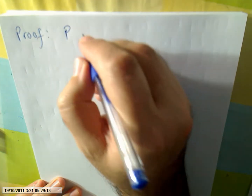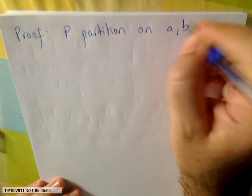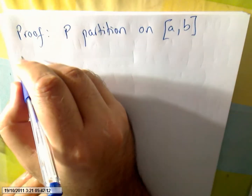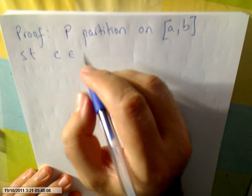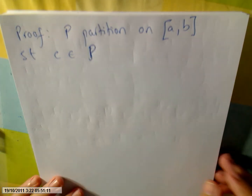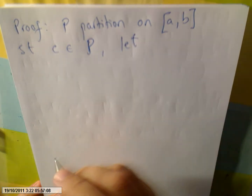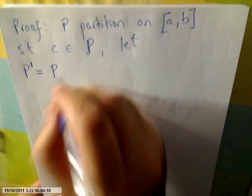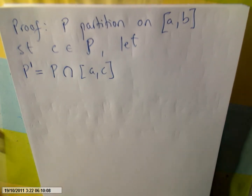Let P be a partition on [a,b], such that C is a point in the partition. Now let P′ be the partition intersected with [a,c].